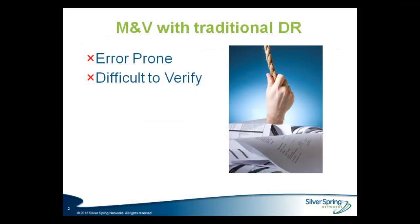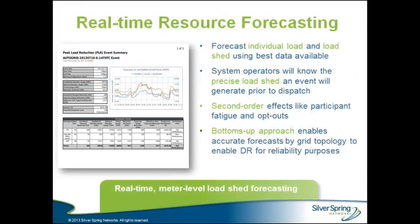Forecasting expected load reduction using legacy DR programs is error-prone and difficult to verify. Utility IQ Demand Optimizer applies big data analytics to provide much more accurate forecasting. It uses historical AMI and weather data to forecast both load and load shed potential. The software also takes into account second-order effects, such as participant fatigue and opt-outs, for increased accuracy.